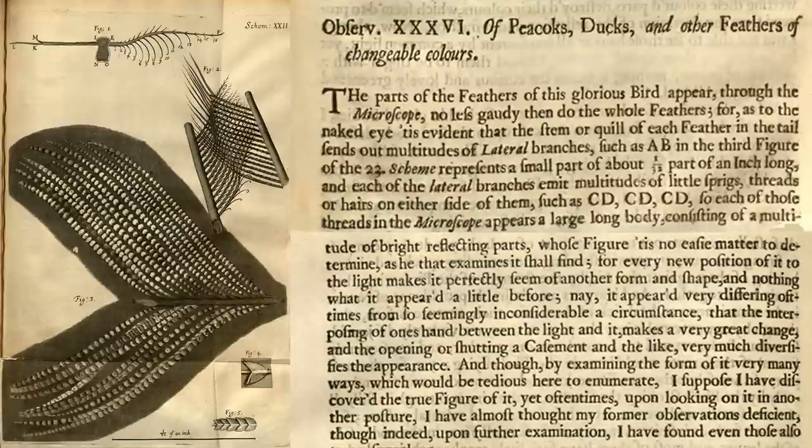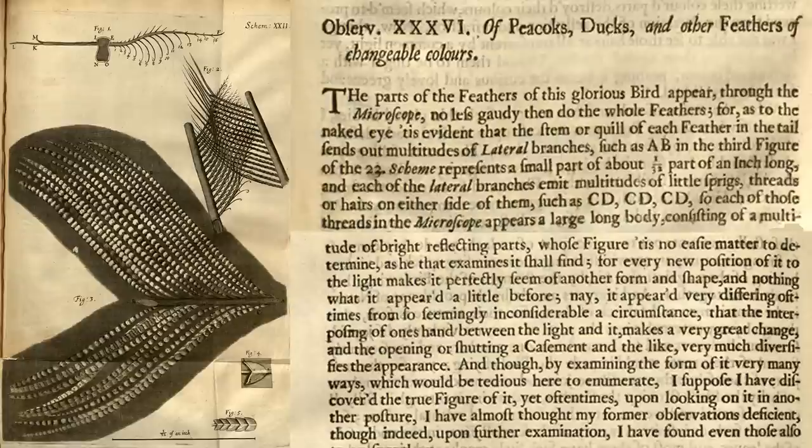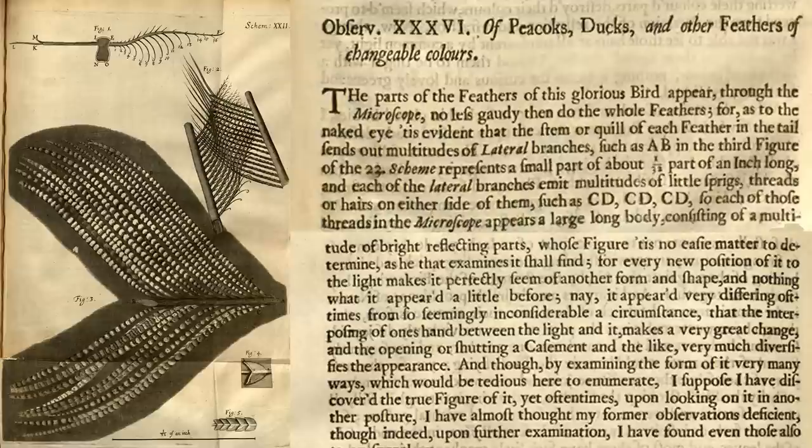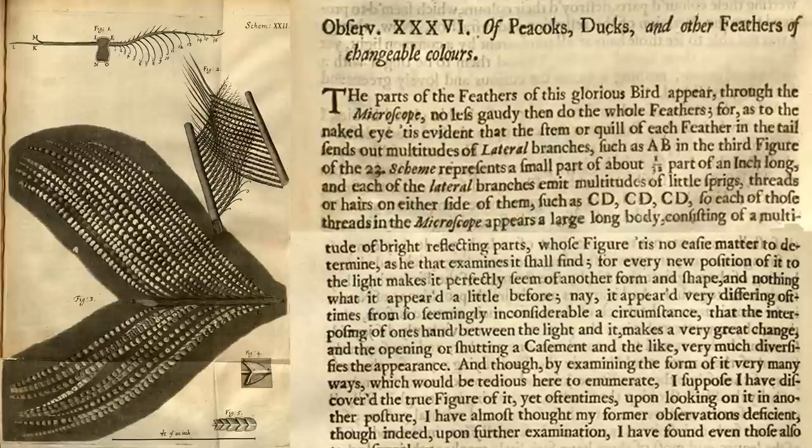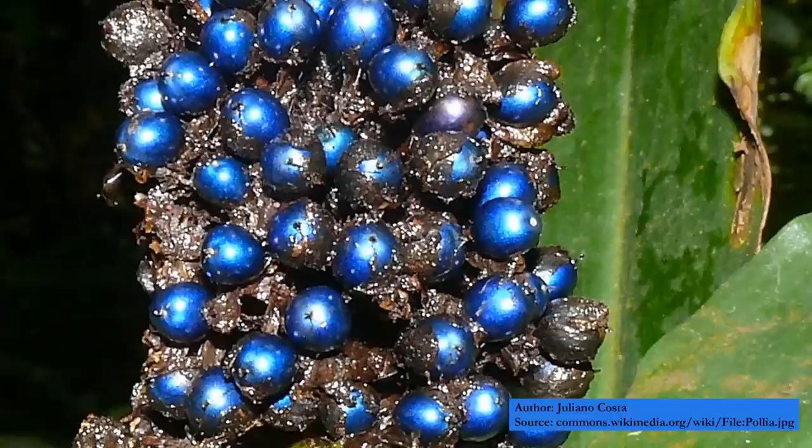A peacock's tail feathers are brown, as are the wings of butterflies and many other wonders of nature. Robert Hooke described the small-scale structure of the peacock's feather in his Micrographia. The parts of the feathers of this glorious bird appear, through the microscope, to be no less gaudy than do the whole feathers. So each of those threads in the microscope appears a large long body, consisting of a multitude of bright, reflecting parts, whose figure tis no easy matter to determine. For every new position of it to the light makes it perfectly seem of another form and shape, and nothing what it appeared a little before.